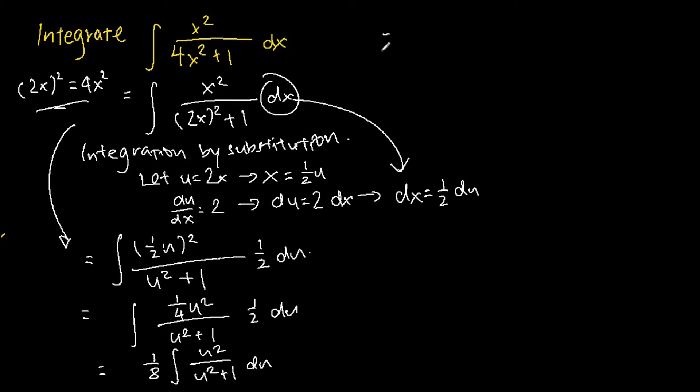The next step, what we're going to do is we will, for the numerator, add 1 and subtract 1 and then we will split this integral out into two integrals. The first integral will be the integral of u squared plus 1 over u squared plus 1 du, while for the second integral will be the negative of 1 over u squared plus 1 du.